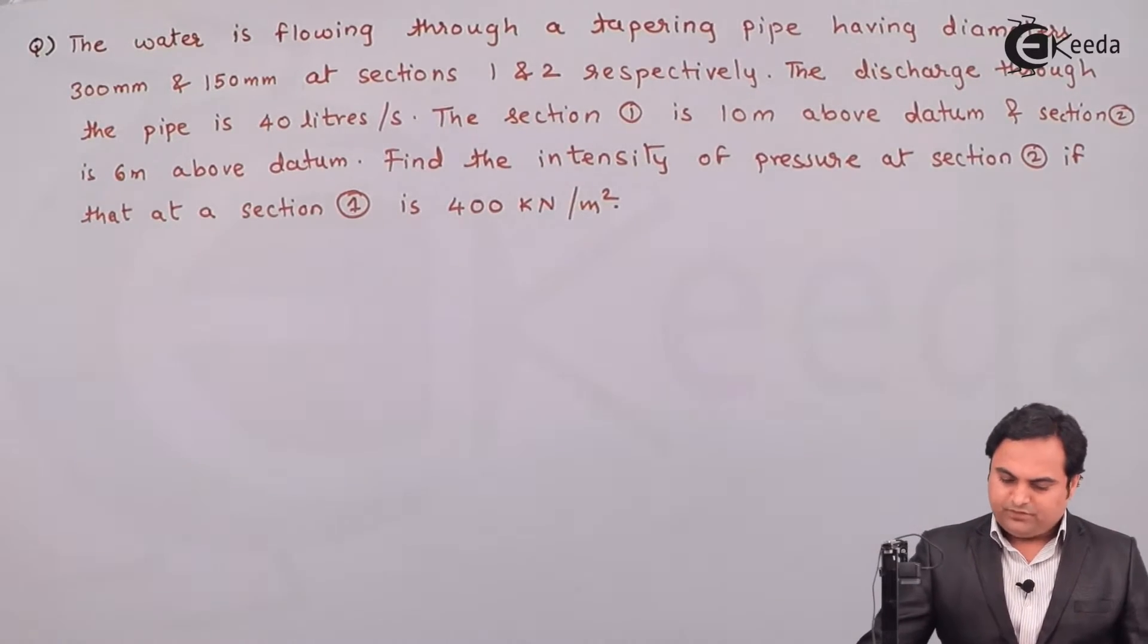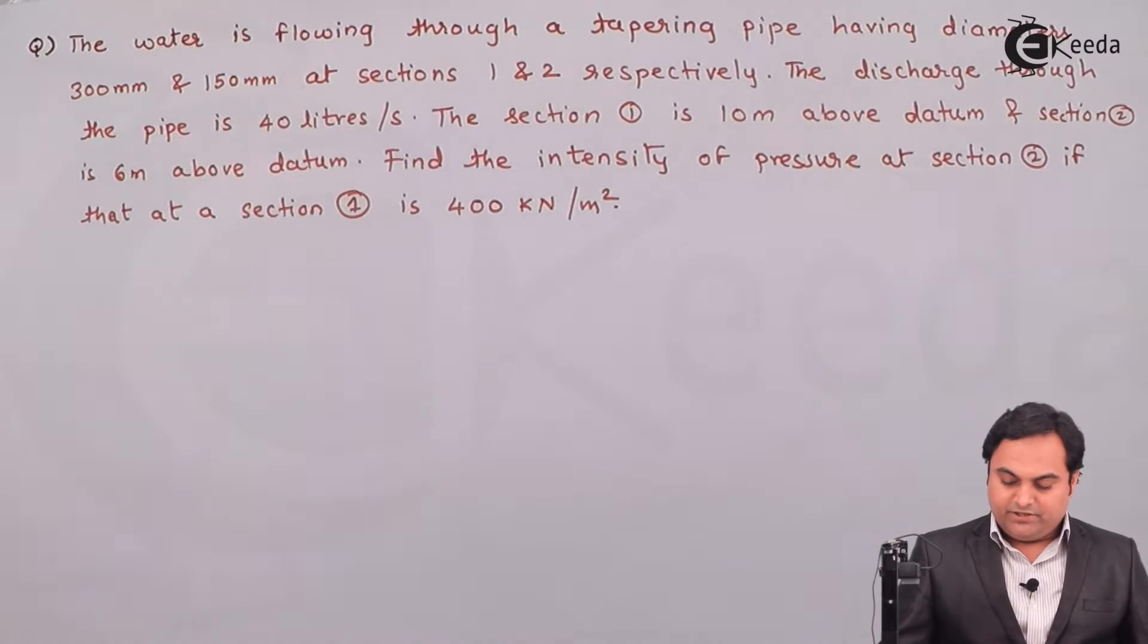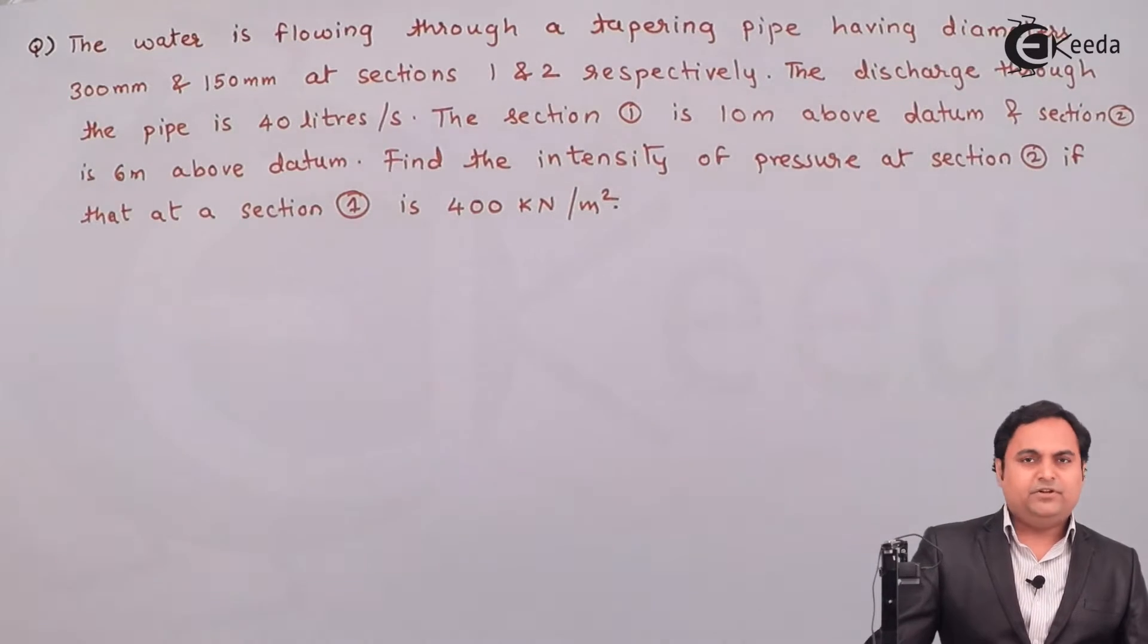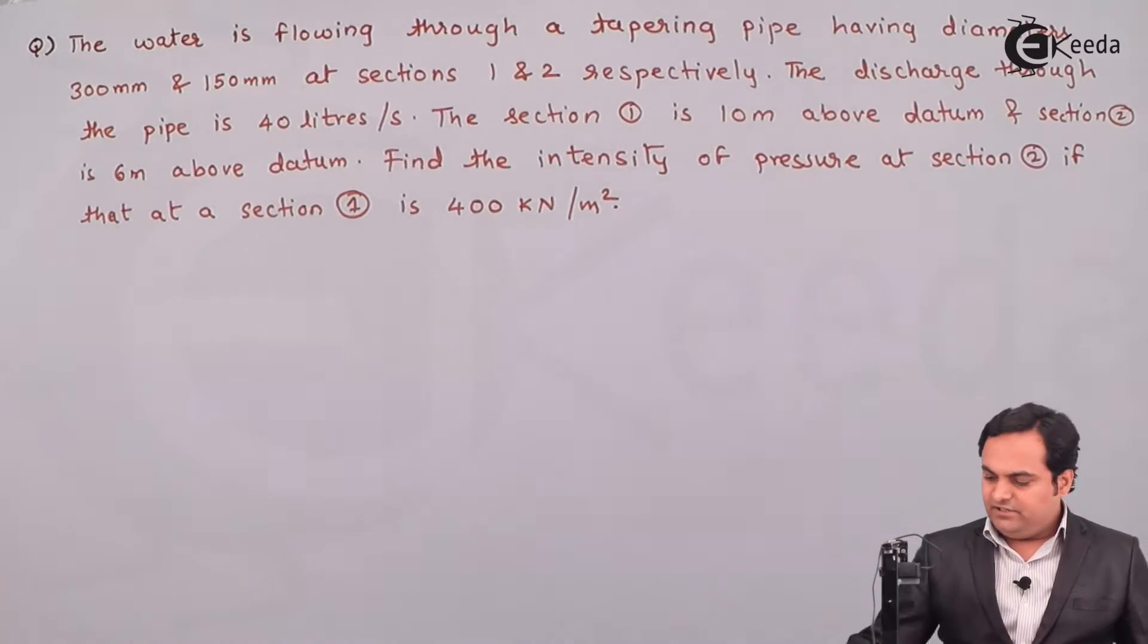Section 1 is 10 meter above datum and section 2 is 6 meter above datum. Find the intensity of pressure at section 2 if that at section 1 is 400 kilonewton per meter square. So first, whatever is given here I'll write that in the form of data.